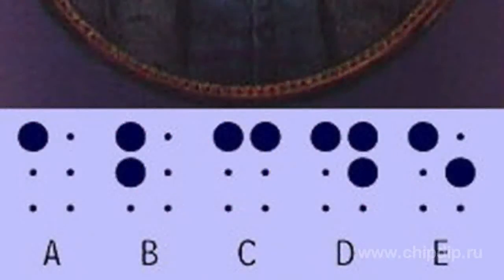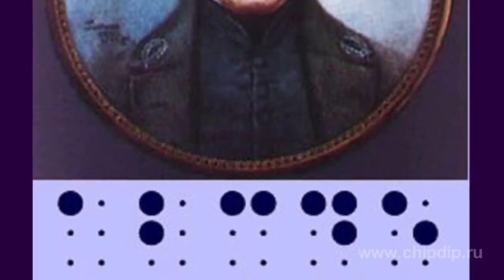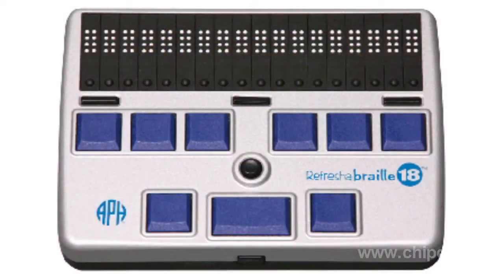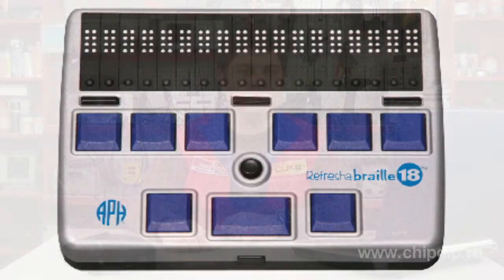A Braille terminal is an electromechanical device designed to display text data using 6-dot Braille characters. The system was invented in 1821 by French scientist Louis Braille. Usually only 40 to 80 characters are shown on the display simultaneously, and there also exist portable models with an even smaller number of display characters.